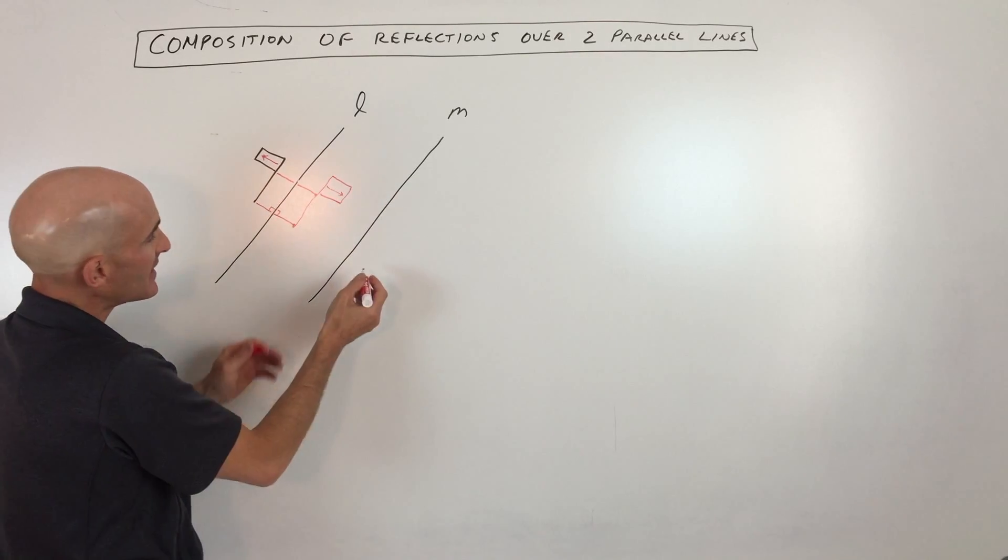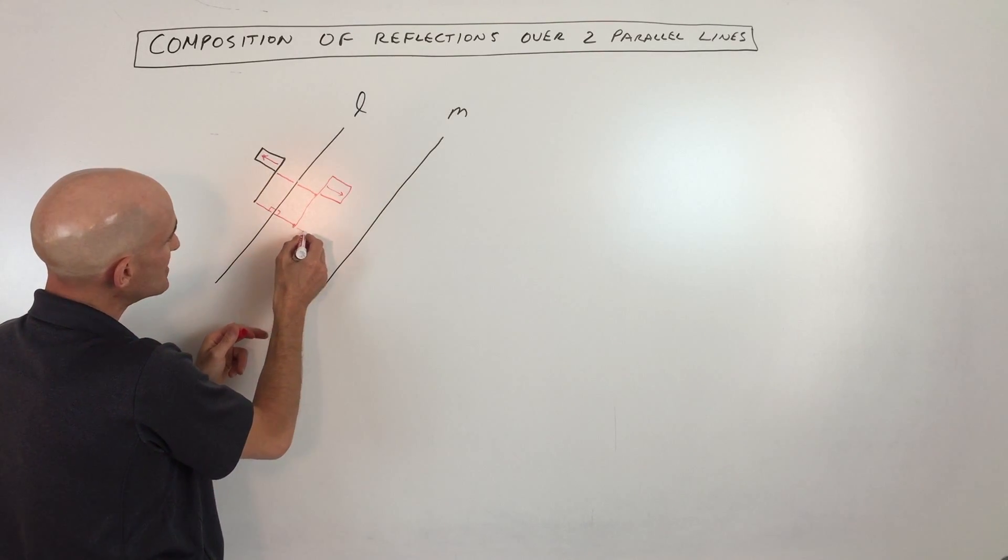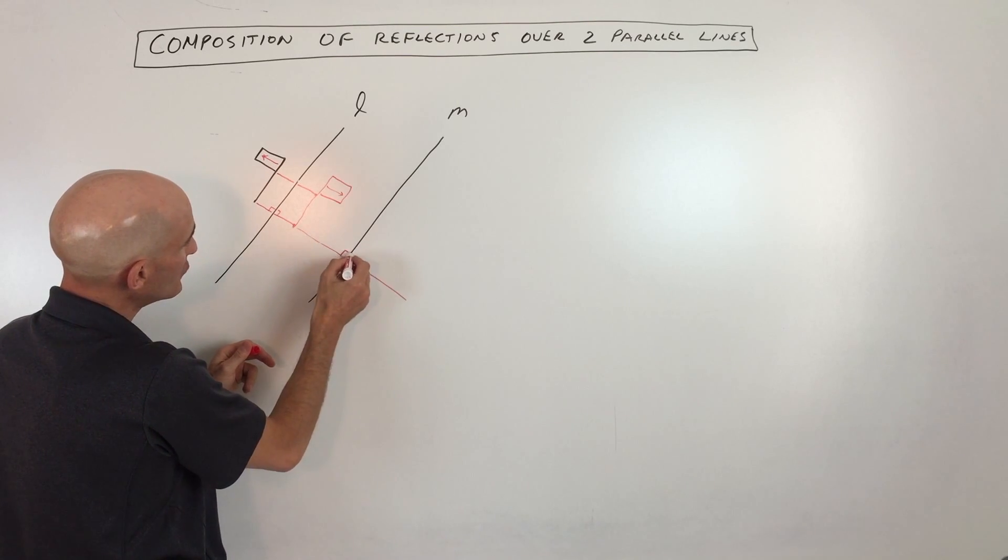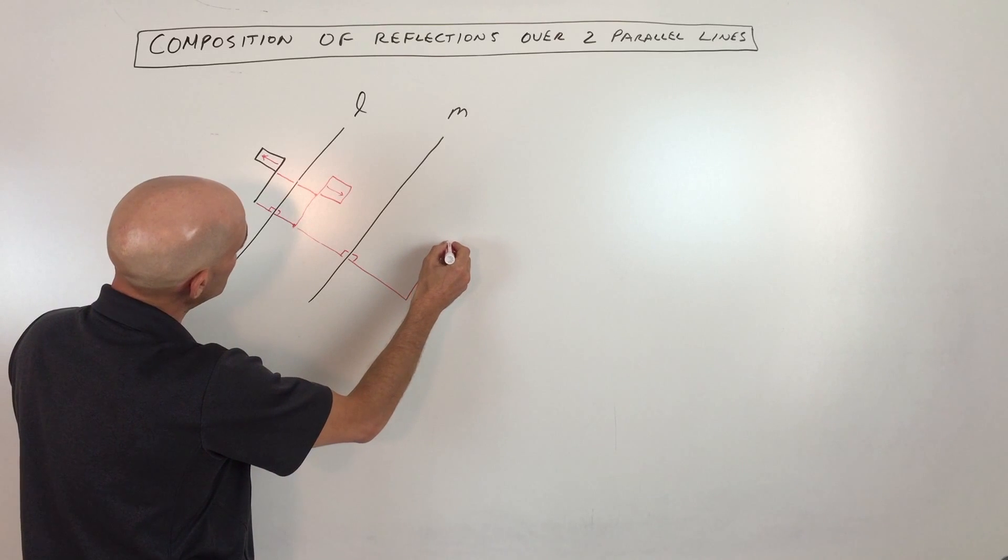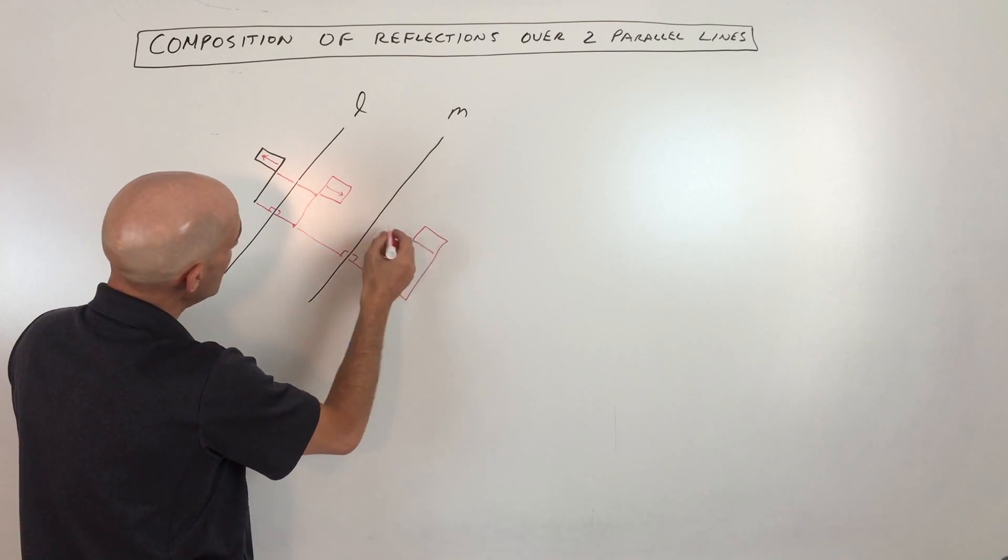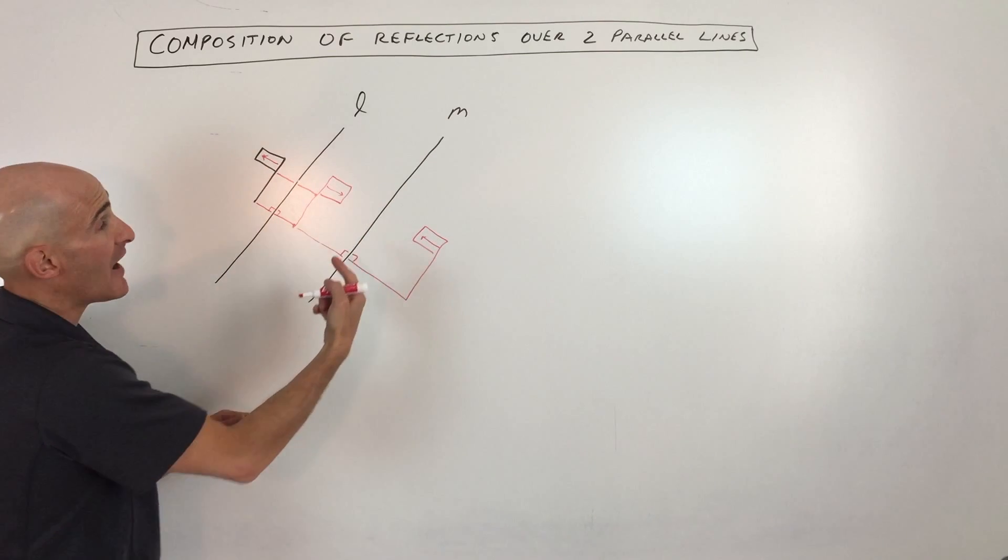And if we reflect it a second time, okay, so again, look at this distance here. We want to go the same distance perpendicular to the line of reflection. You can see we're getting a flag that looks something like this. Now you can see again, it's pointing back to the left.